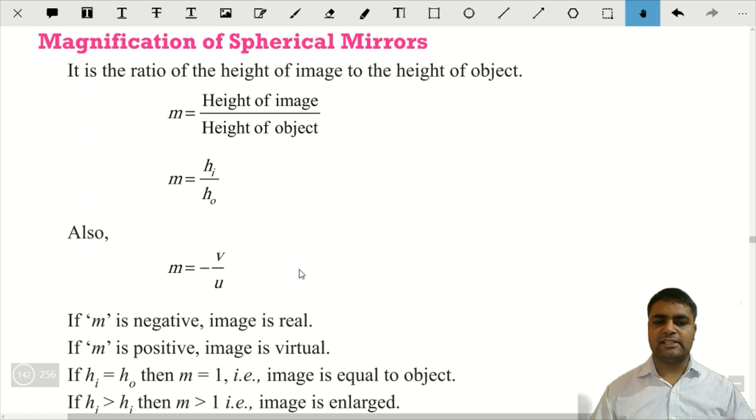Next, abh yahan pe kuch basic concepts hai. If m is negative, image is real. Agar m negative hoga, toh image kaisi hogi? Real.